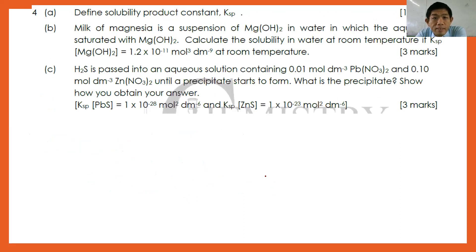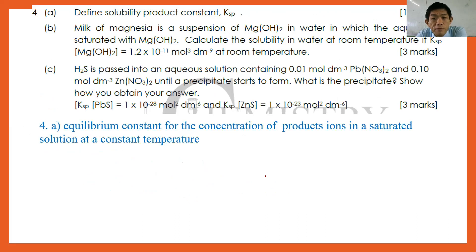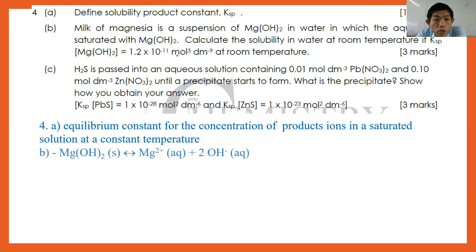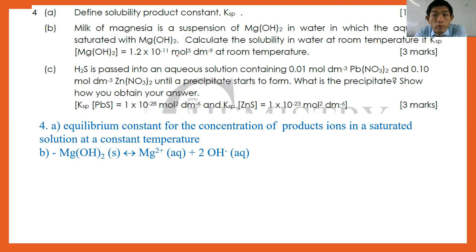Question four: define the solubility product constant Ksp. Ksp is an equilibrium constant for the concentration of product ions in a saturated solution at constant temperature. Part B: milk of magnesia is a suspension of Mg(OH)2 in water in which the aqueous phase is a saturated Mg(OH)2 solution. Calculate the solubility of Mg(OH)2 at room temperature given Ksp = 1.2 × 10⁻¹¹ mol³ dm⁻⁹. Always write the dissociation equation first and include the states of matter.